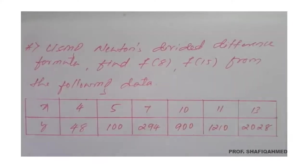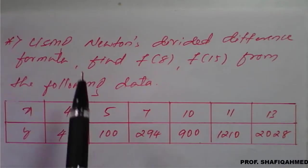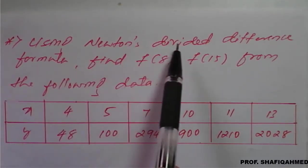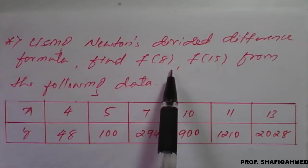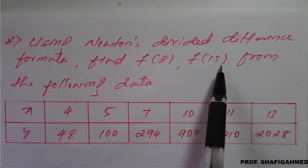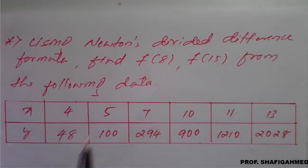Hello everyone. In this lecture we will see a problem based on Newton divided difference. The problem is: using Newton's divided difference formula, find f of 8 and f of 15 from the following data.